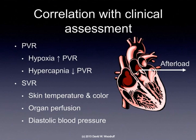To assess our afterload — which is the resistance the heart has to pump against — we can look at our pulmonary vascular resistance and our systemic vascular resistance. Pulmonary vascular resistance can be affected by hypoxemia and/or hypercapnia, whereas systemic vascular resistance is going to be reflected by looking at skin temperature and color, organ perfusion, and our diastolic blood pressure. So diastolic is a better indicator of our vasculature, whereas systolic is a better indicator of our cardiac output.